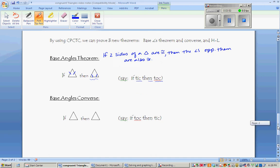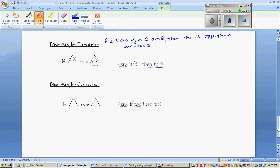Now the converse also works. If you have congruent base angles—so if two angles of a triangle are congruent—then the sides opposite them are also congruent. So if you have congruent base angles, then you know you have an isosceles triangle. Basically, 'if talk, then tick.' If the angles are congruent, then the sides are congruent.